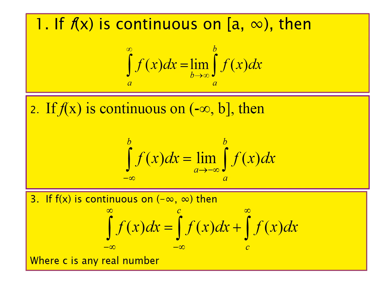Write this down: when we have an improper integral, if it goes from a to infinity, we find the limit as b approaches infinity of the integral from a to b. If it goes from negative infinity to b, we set up a limit similarly. And if it goes from negative infinity to infinity, we break it into two separate integrals — from negative infinity to c, and from c to infinity, where c is any real number.